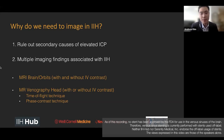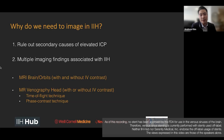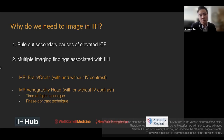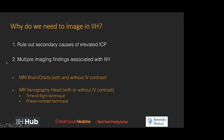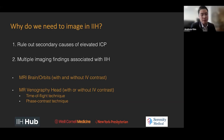In terms of imaging, the question is why do we need it? What's its purpose in the whole diagnosis of IIH? And it's really twofold. Number one, we want to rule out secondary causes of elevated intracranial pressures. There are other things that can cause elevated pressures, such as a brain tumor or venous sinus thrombosis. And the second reason for imaging is that there are multiple imaging findings associated with IIH that can really help suggest that diagnosis.